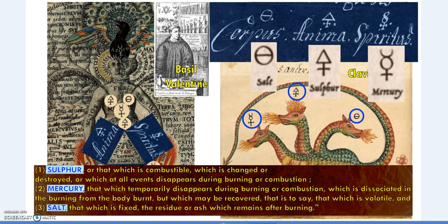Basil Valentine was important because of his concept of the three principles — sulfur, salt, and mercury. Sulfur is that which is combustible, which is changed or destroyed, or which disappears during burning. Mercury is that which temporarily disappears during combustion, which is dissociated from the body burnt but can be recovered — that is, that which is volatile. Salt is that which is fixed, the residue or ash that remains after burning.